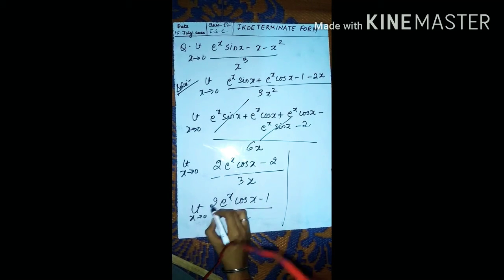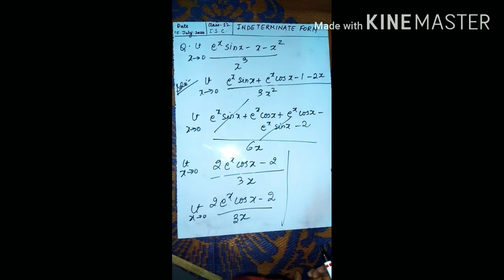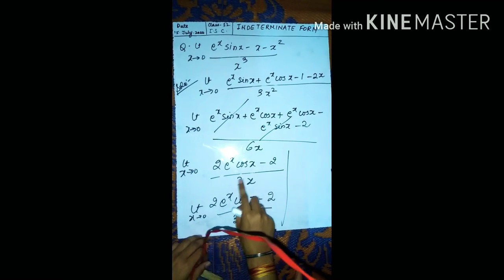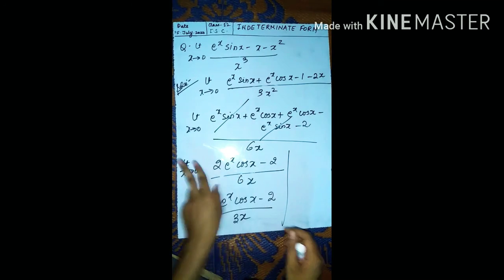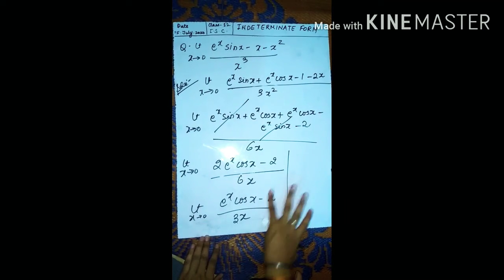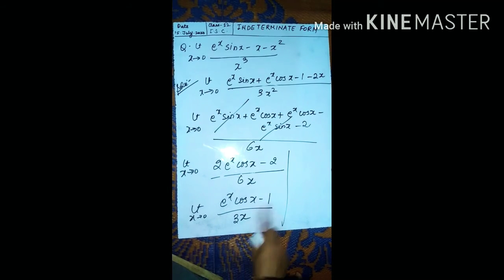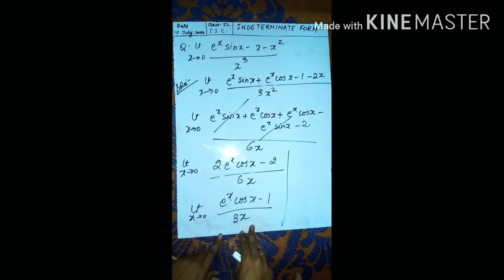Taking 2 common and cancelling with the denominator 6, we get e to the power x times cos x minus 1 upon 3x. Putting x tends to 0 again gives 1 times 1 minus 1, which is 0 upon 0 — so 0 by 0 form again, and we need to use L'Hôpital's rule once more.